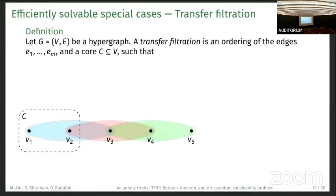The last part we were looking at is efficiently solving special cases. These special cases are characterized by the transfer filtration. We have a hypergraph of constraints, and the transfer filtration is just an ordering of the edges and a so-called core.